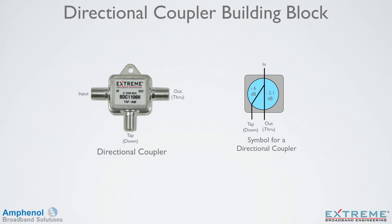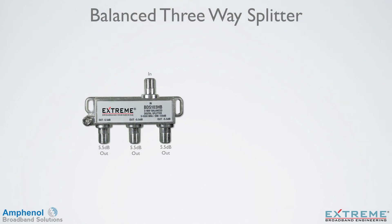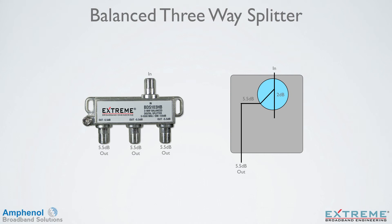The directional coupler is another of the basic building blocks of other splitting devices. When combined with two-way splitters, they make up all other splitting devices. On the right is a simple equivalent of a directional coupler. Now let's look at how a balanced three-way splitter is constructed. On the left is a balanced three-way splitter, and each port has 5.5 dB of loss. In this case, we're starting with a 5.5 dB directional coupler. The tap leg, which loses 5.5 dB, feeds directly to one of the 5.5 dB ports. The output port of the directional coupler loses 2 dB, so in order to get an additional 3.5 dB of loss, we add one two-way splitter off this leg for a total loss of 5.5 dB on the other two legs. Now each output port has 5.5 dB of loss.